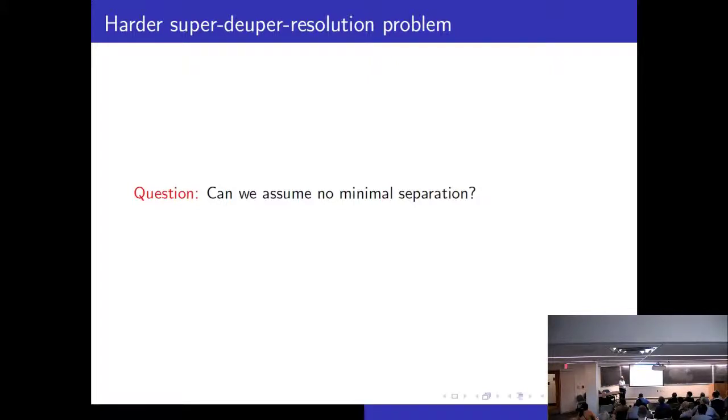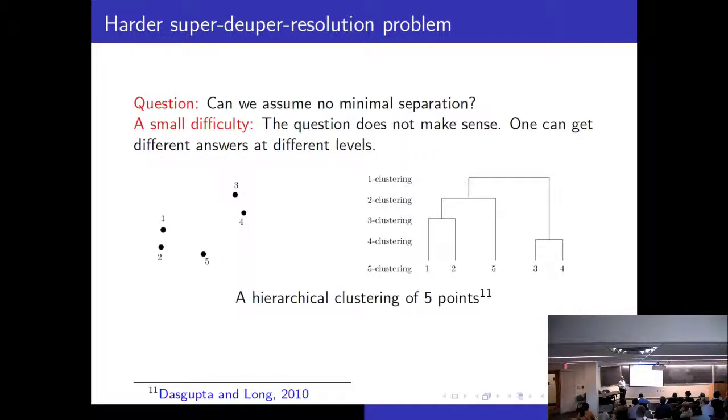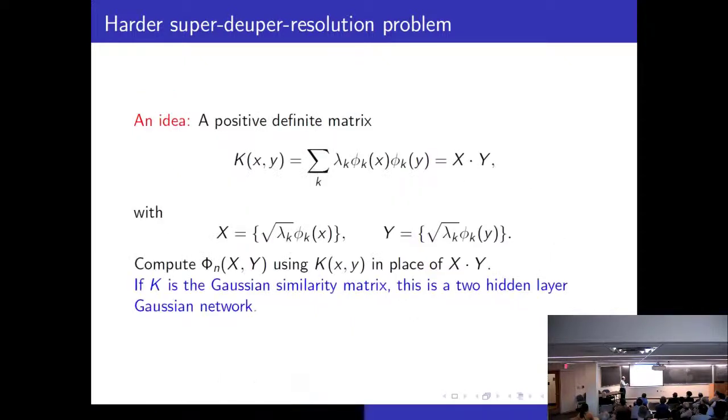There is a small problem when we remove this assumption of minimal separation. The problem doesn't make sense. So here is an example why it doesn't make sense. So here are just five points. We can imagine of course that all these five points are coming from the same distribution. But you see that depending upon the eyes of the beholder there are various ways of clustering this. This is one cluster, this is another and this is by itself. Or you can say that this is one cluster and this is another cluster. So at different levels there are different clusters.